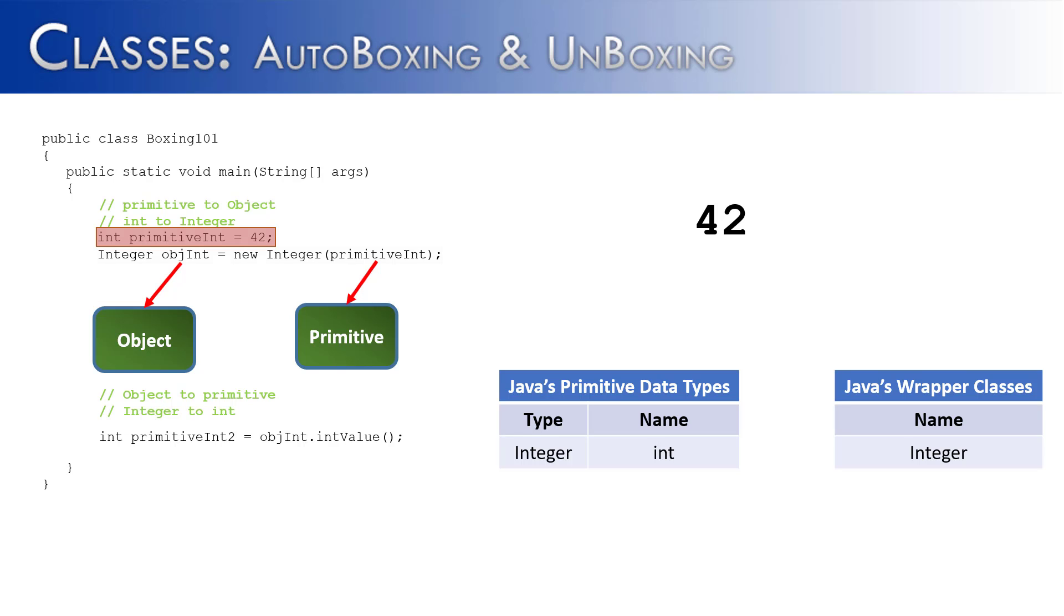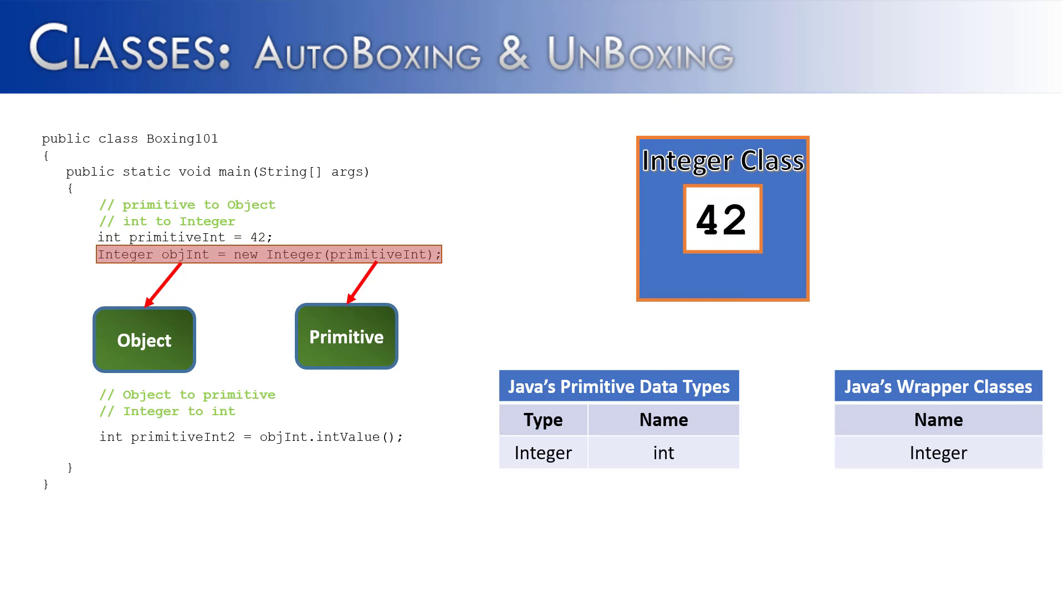When this line is complete we're going to see that that integer class is going to wrap around the primitive and so effectively we have an integer object as opposed to a primitive. We've moved from int into integer.